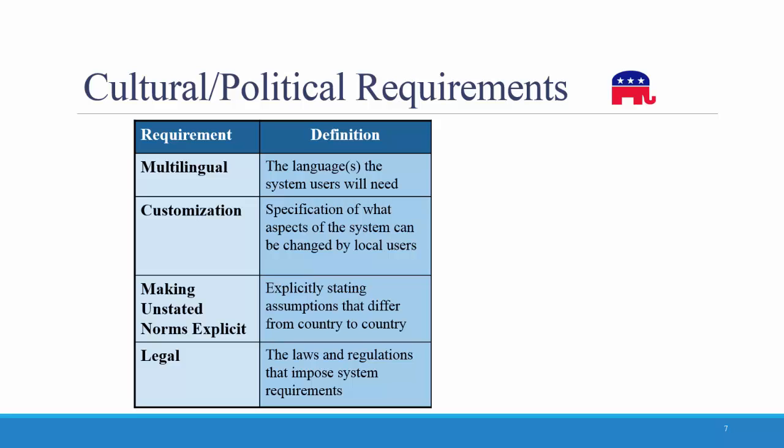The last major category of non-functional requirements is cultural and political. Multilingual involves the language or languages that the system users will need. For example: Our system will operate in English, French, and Spanish. The second category is customization, which involves the specification of what aspects of the system can be changed by local users. For example: Country managers will be able to define new fields in the product database to capture country-specific information.